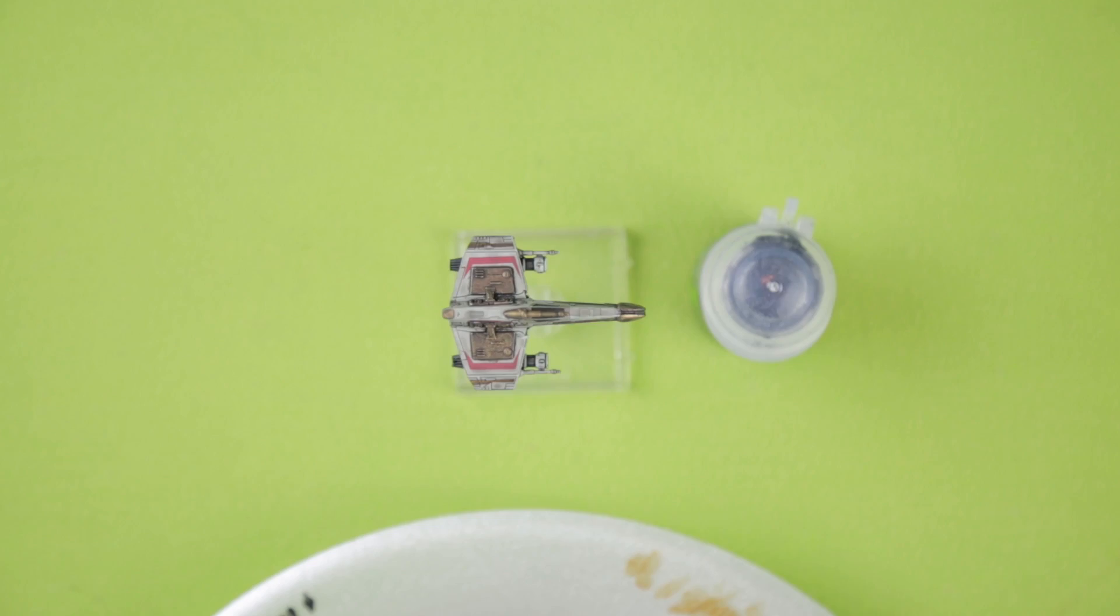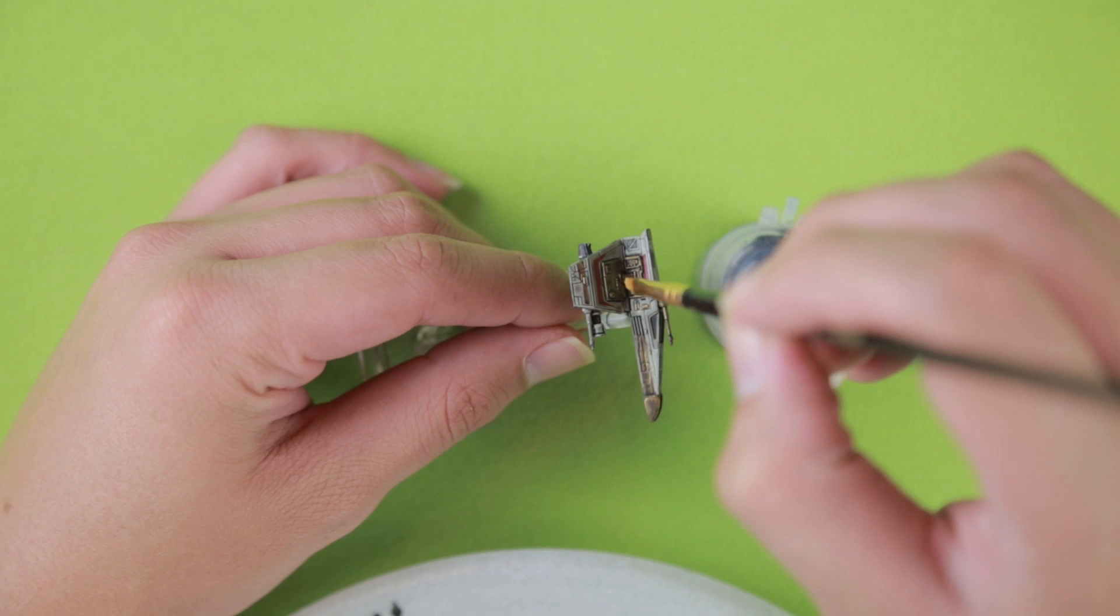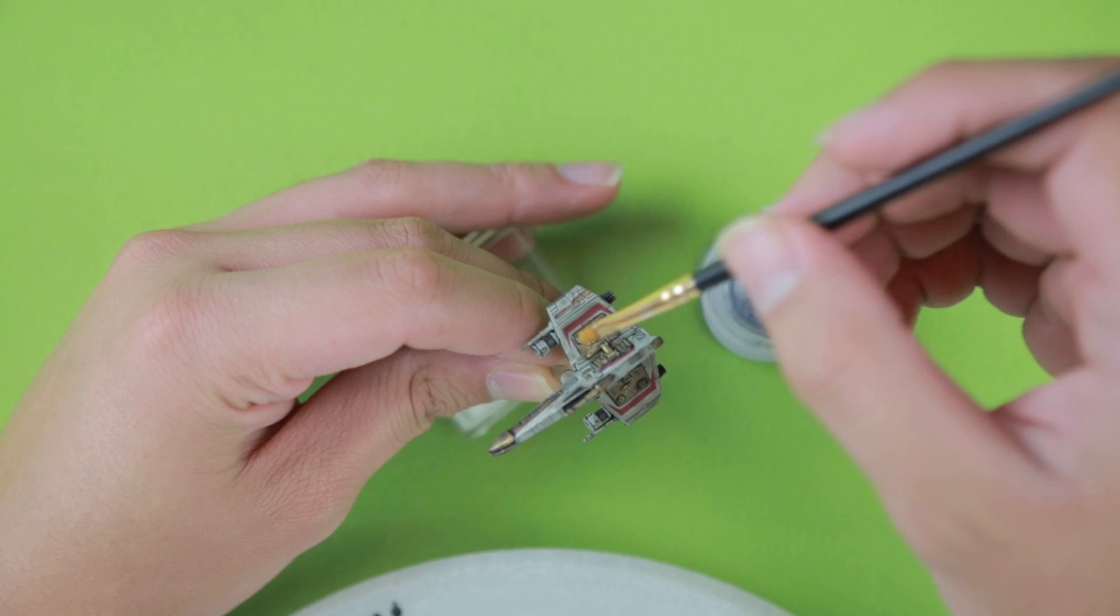I'm also using my Filbert here and this is similar to a dry brushing technique. I'm not wiping as much of the paint off on the paper towel as I would have if I were dry brushing. This is more of a highlight technique. You really want enough paint on there so that it really brings that shine back on the gold.